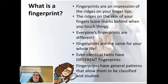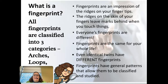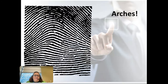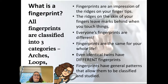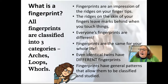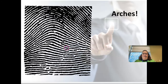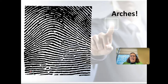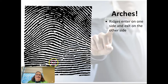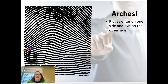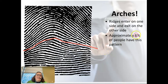All fingerprints can be classified into three categories: arches, loops, and whorls. Starting with arches — the ridges enter on one side and leave on the other side. Approximately 6% of people have this kind of fingerprint, so it's not very common.